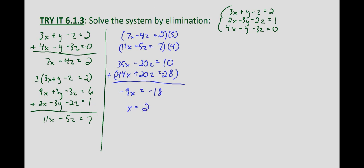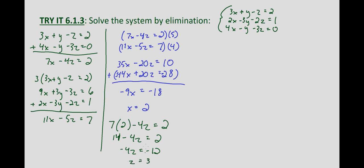Now let's back substitute to solve for z. Using the equation 7x - 4z = 2 with x = 2: 7 times 2 minus 4z equals 2, so 14 - 4z = 2, then -4z = -12, and dividing both sides by -4 gives z = 3.